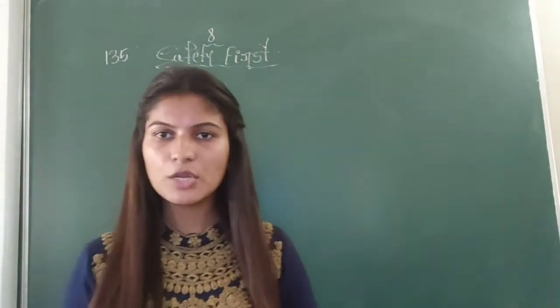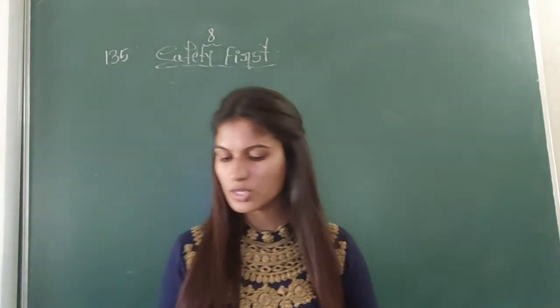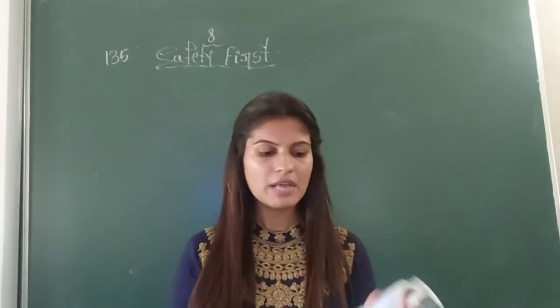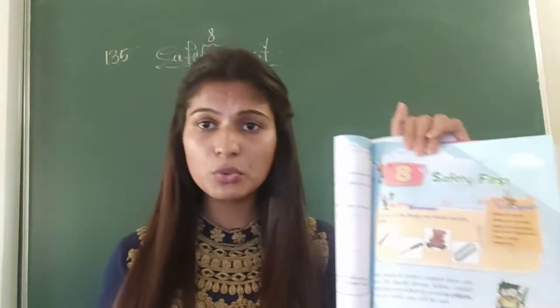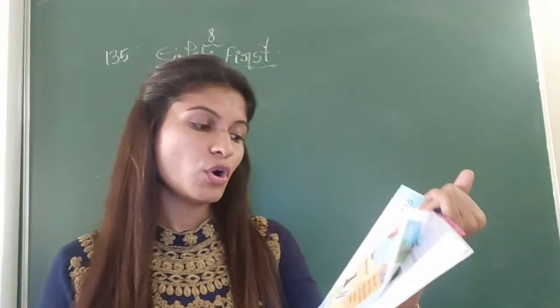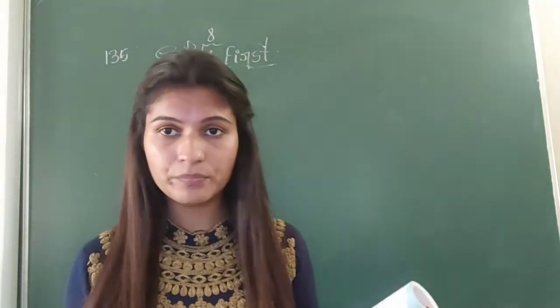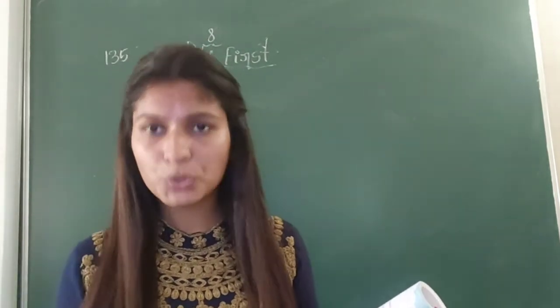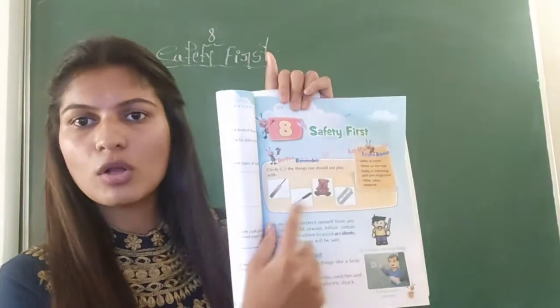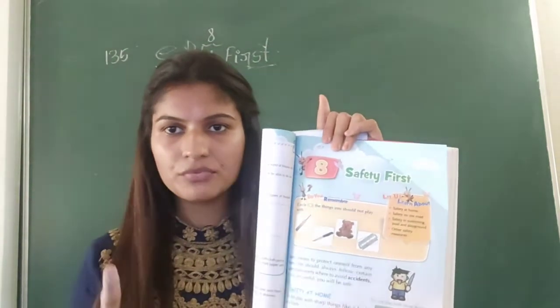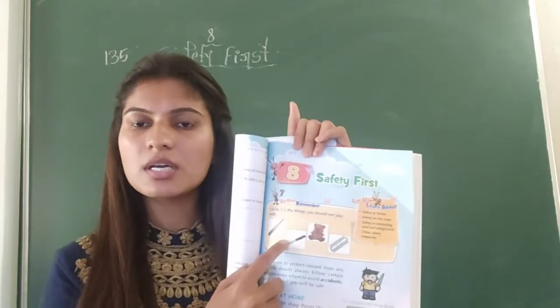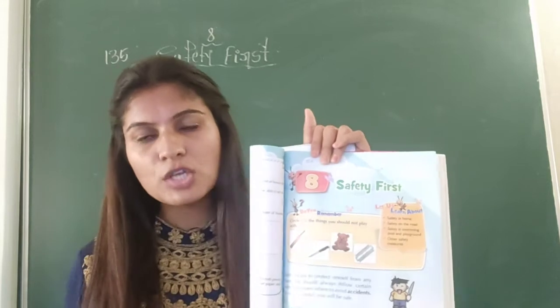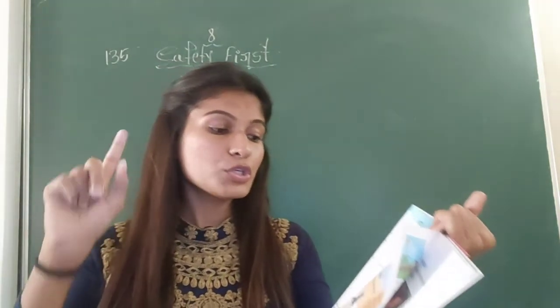Take a pencil in your hand because I am going to discuss some questions on page number 135. You can see a box with four pictures. What you have to do is circle the things you should not play with. Some things are toys we should play with, but some objects are very harmful to us.